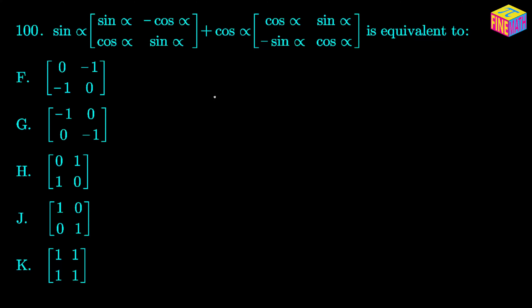Since the result matrix is going to be a 2×2 matrix, let's assume that the result matrix is equal to [A, B; C, D]. Those are the four elements of the result matrix. It will be very easy to calculate the values of A, B, C, and D.